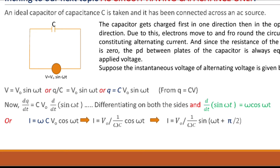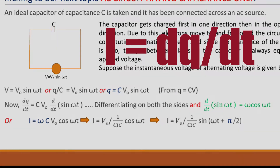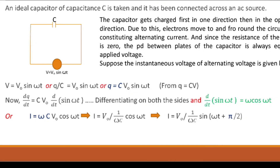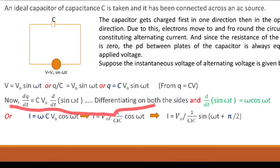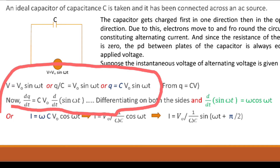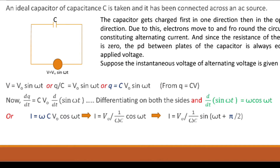Current is nothing but charge flowing per unit time, so we use the formula i = dq/dt. Since there is no resistance, the potential difference across the capacitor always equals the applied voltage: v = V₀ sin(ωt). To calculate current we differentiate both sides. We have dq/dt on the left-hand side. On the right-hand side, CV₀ is constant, so we differentiate sin(ωt) to get ω cos(ωt). Finally we have i = ωCV₀ cos(ωt).